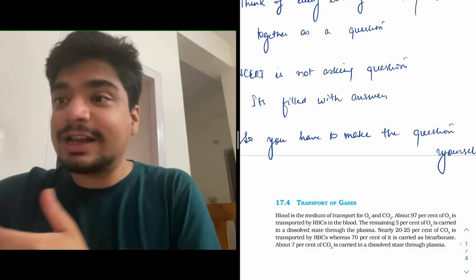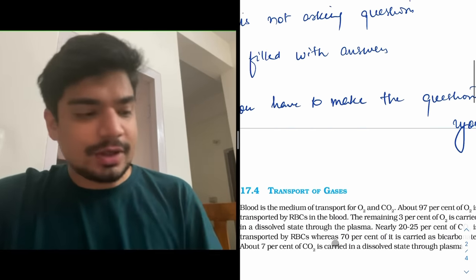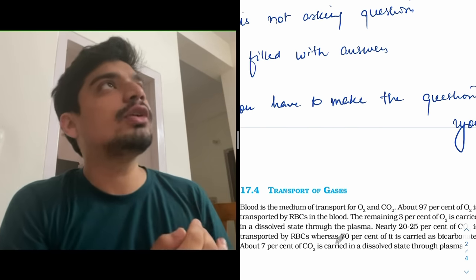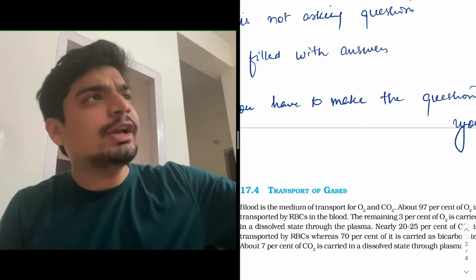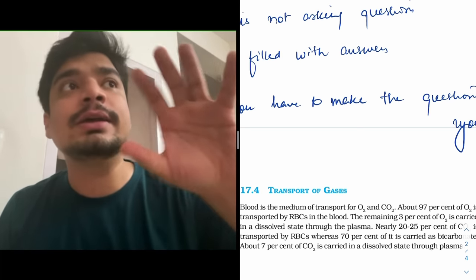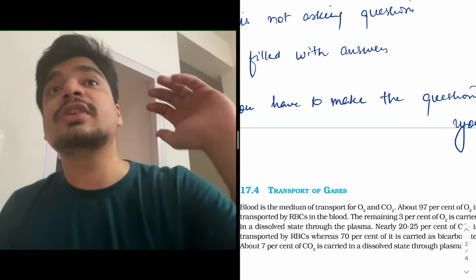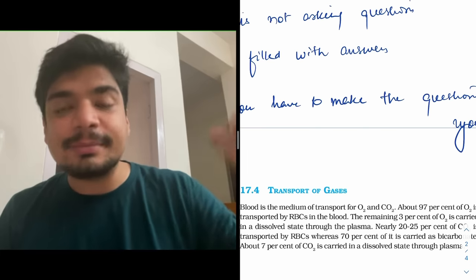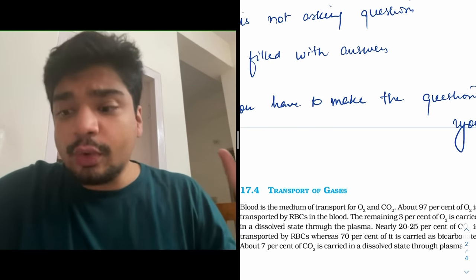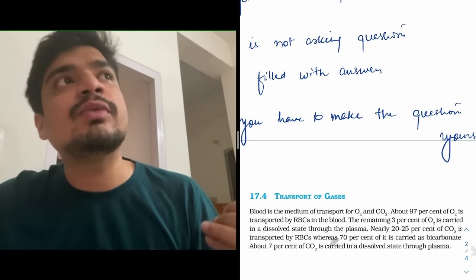What are the questions that can be framed from this? Enumerable. They can ask you a question: which of the following is a false statement? You should keep in mind they can give you all these percentages. '22 to 25% of carbon dioxide is transported as bicarbonate' - rest all statements can be true. 97% of oxygen is RBC, 3% is dissolved state. These statements can be correct and the 20 to 25% of carbon dioxide as bicarbonate will be the false statement. So you should imagine a question when you're reading this.